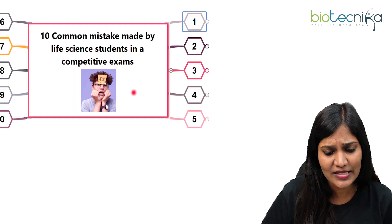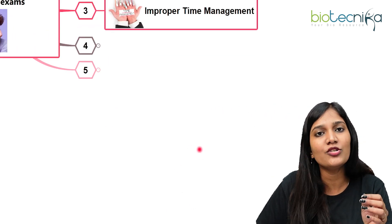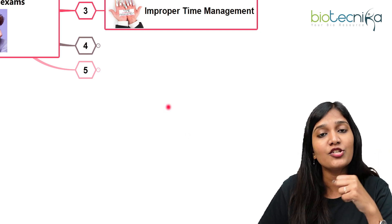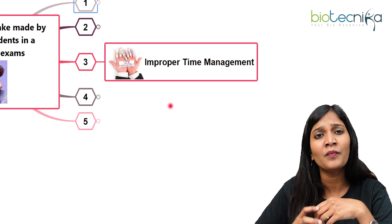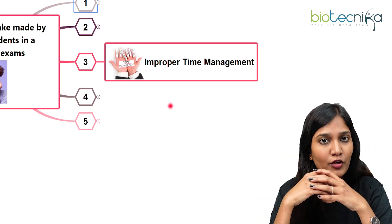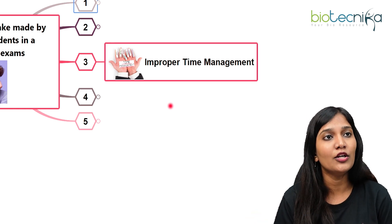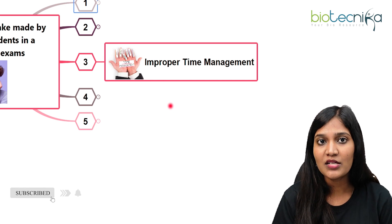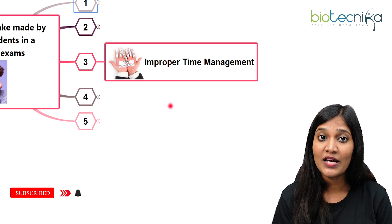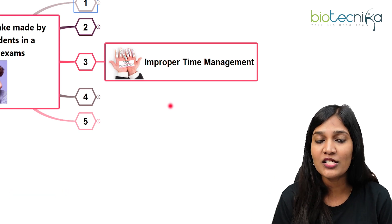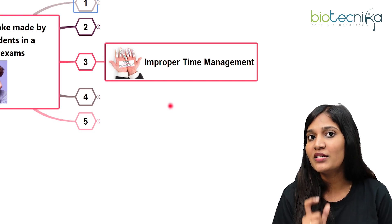The third common mistake is improper time management. As already mentioned, almost two to three hours will be allocated for most competitive examinations. You might have studied all the units very thoroughly — in the case of CSIR, perhaps 13 units. But if you don't know how to manage answering within two to three hours, even though you've studied everything, you would not be able to answer within the time slots.